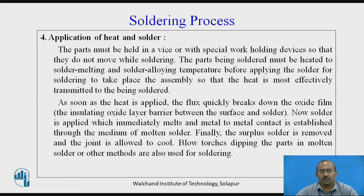Application of heat and solder — the next step of soldering process. The parts must be held in a vice or with special work-holding devices so that they do not move while soldering. The parts being soldered must be heated to solder melting and solder alloying temperature before applying the solder. As soon as heat is applied, the flux quickly breaks down the oxide film — the insulating oxide layer barrier between the surface and solder. Now solder is applied, which immediately melts and metal-to-metal contact is established through the medium of molten solder. Finally, the surplus solder is removed and the joint is allowed to cool. Blow torches, dipping the part in molten solder, or other methods are also used for soldering.